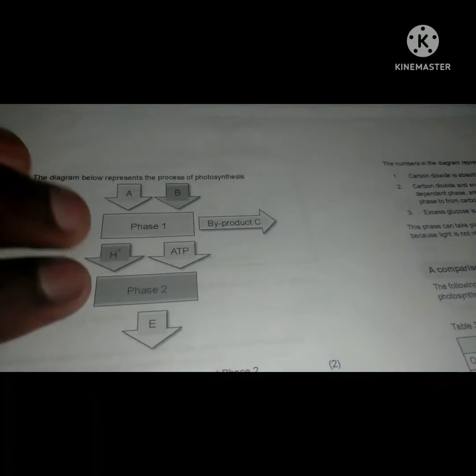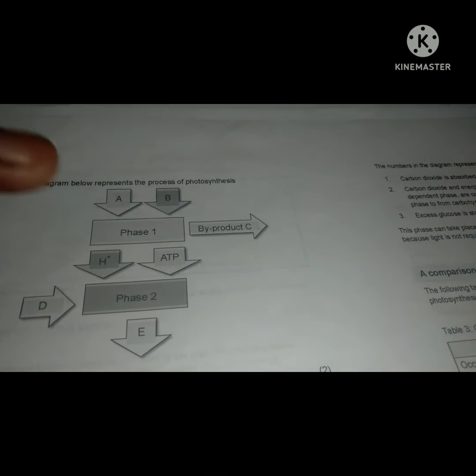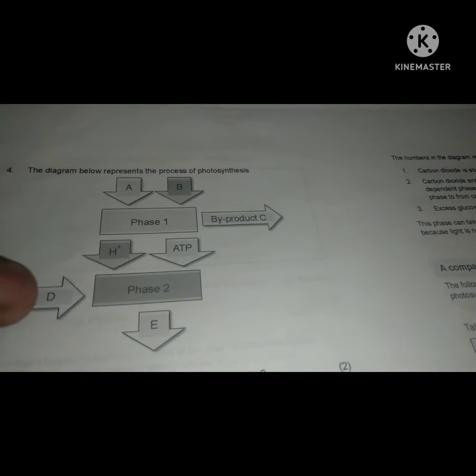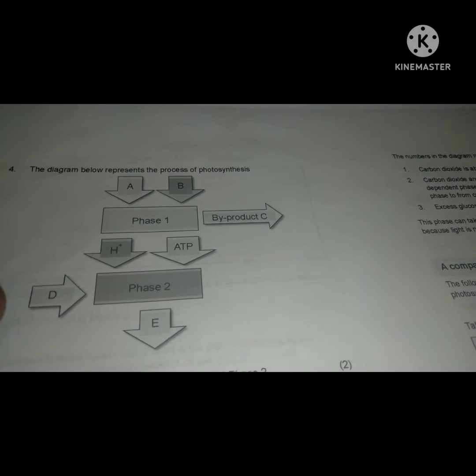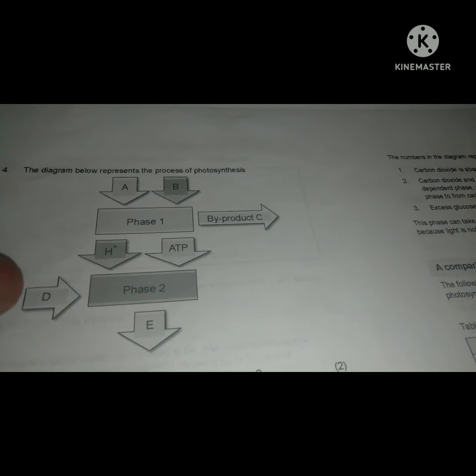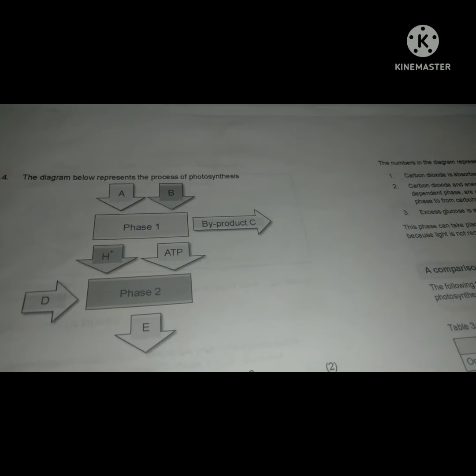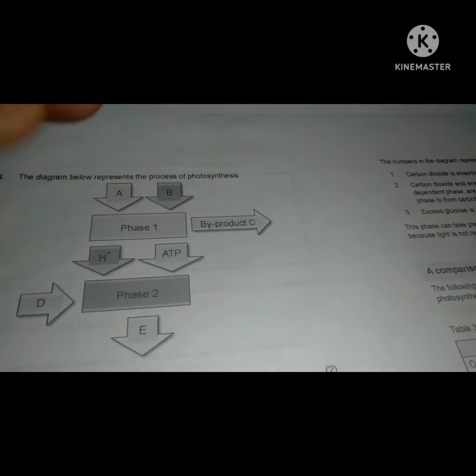D in phase 2: since we identified that this is phase 1 which is the light phase of photosynthesis, D indicated by an arrow goes into phase 2. According to what we learned, D is carbon dioxide which is used to react with the hydrogen and the ATP.